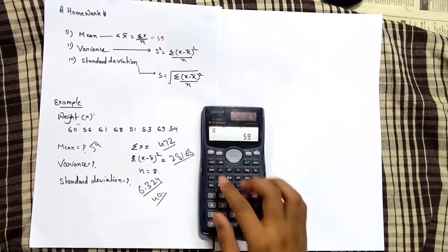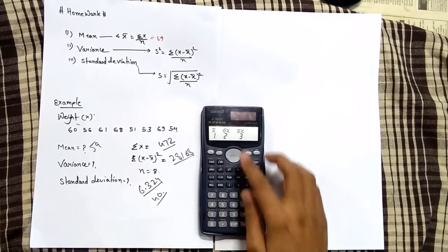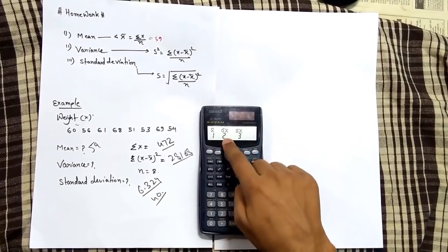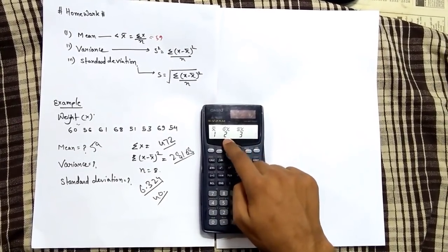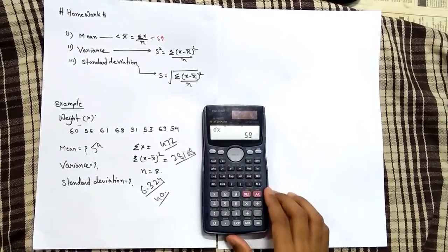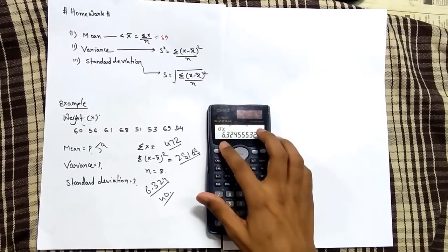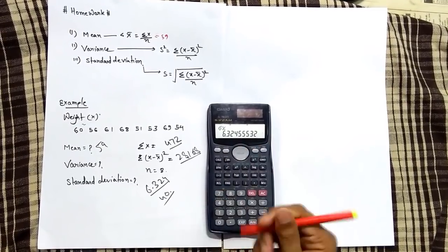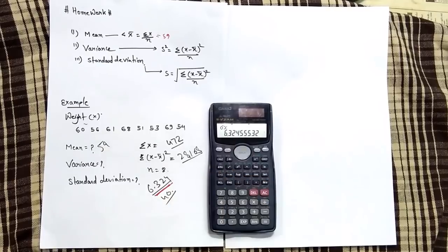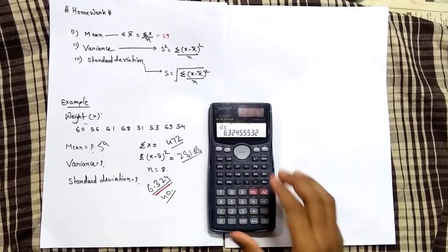We'll press shift, then press 2, then select 2 for the standard deviation. Press 2, so your standard deviation equals 6.324. The standard deviation is this value.